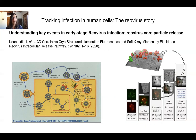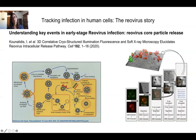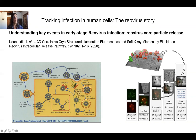Reovirus infects cells most likely by clathrin-dependent endocytosis — it sits on the surface of the cell and gets endocytosed, ending up trapped within a vesicle inside the cell. It was proposed that it is likely to punch holes in the vesicle, whereupon it releases core particles that escape the vesicles and can go further to create progeny. We were interested in tracking this process and seeing when and how it happens and whether it affects the shape of the vesicles.